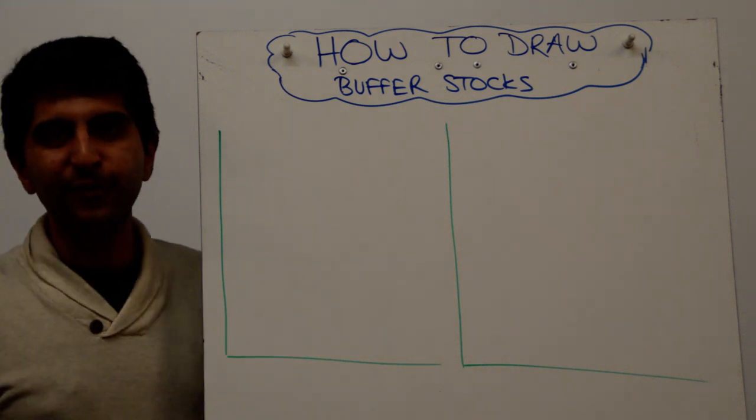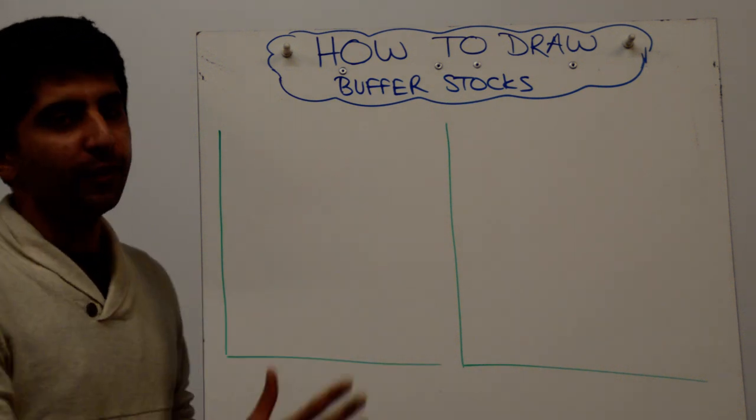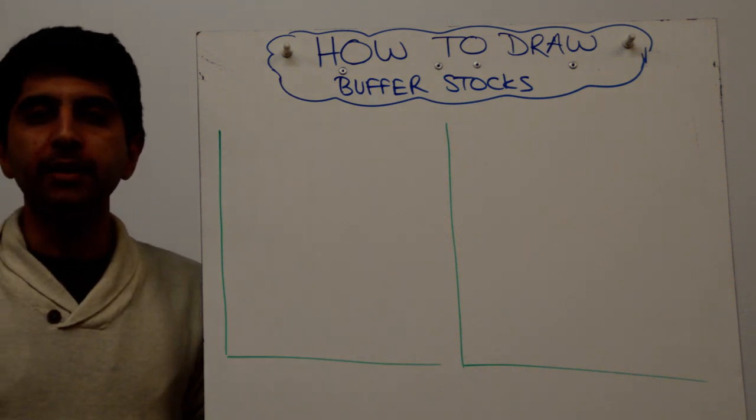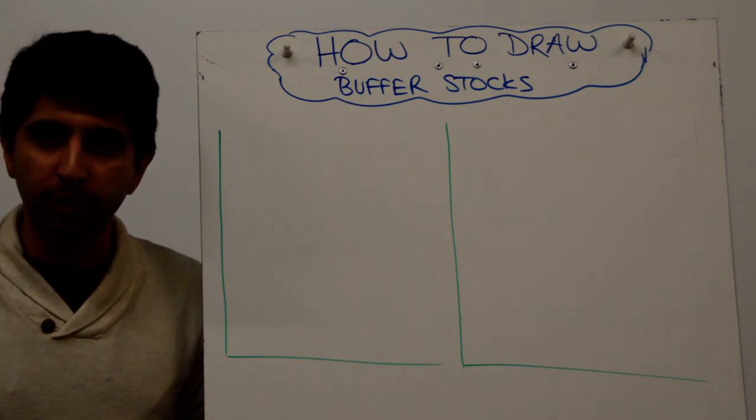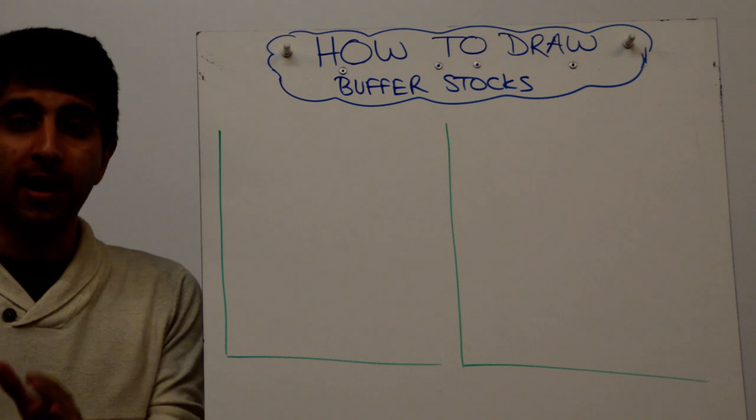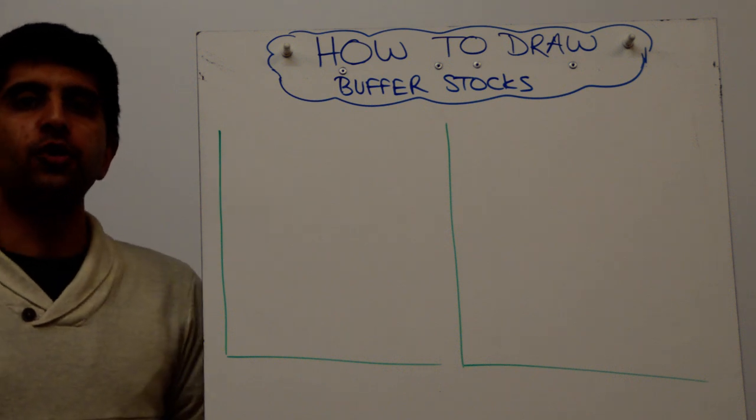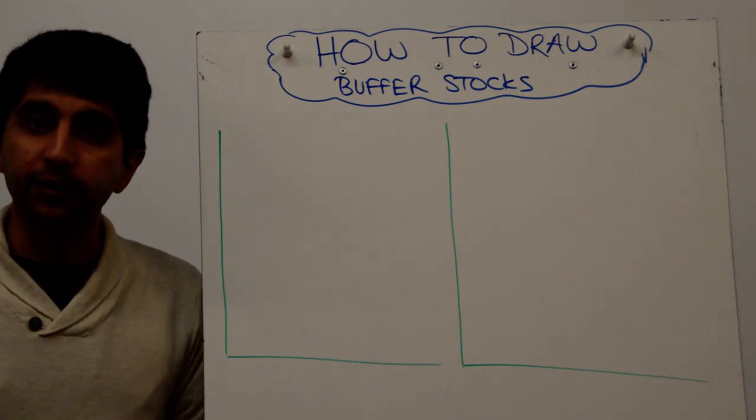Hi everybody, welcome to this video on buffer stocks, a policy that's used by the government often to stabilize fluctuating primary commodity prices to protect both producers if the price goes too low and consumers if the price is under pressure of getting too high.